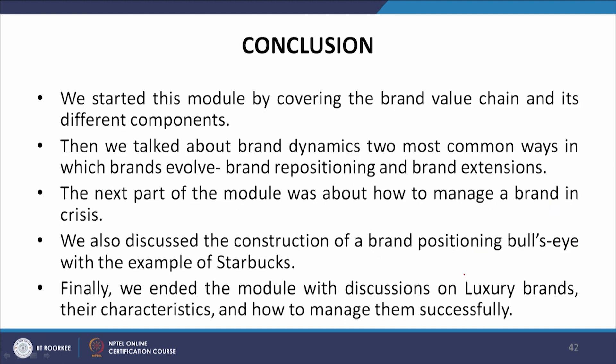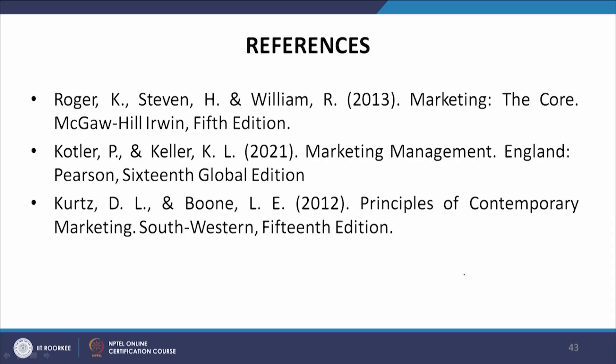In conclusion, this module covered the brand value chain and its different components, brand dynamics including the two most common ways brands evolve — brand repositioning and brand extensions — how to manage a brand in crisis, the construction of a brand positioning bull's eye illustrated with the Starbucks example, and finally, luxury brands including their characteristics and how to manage them successfully.